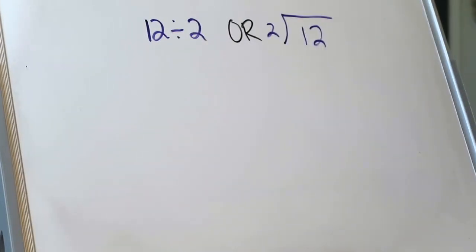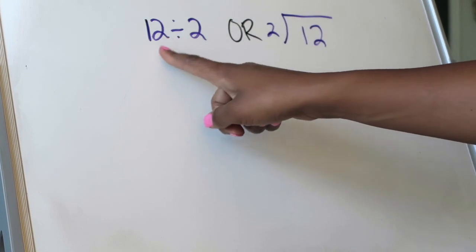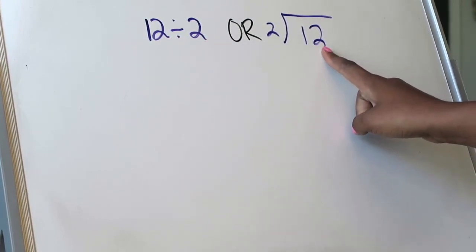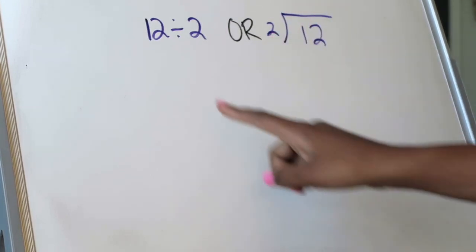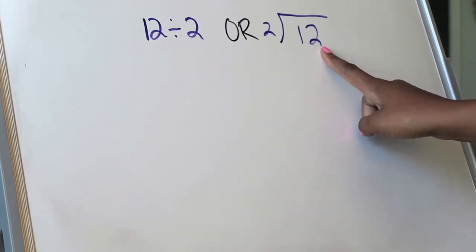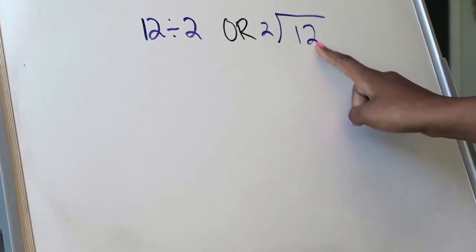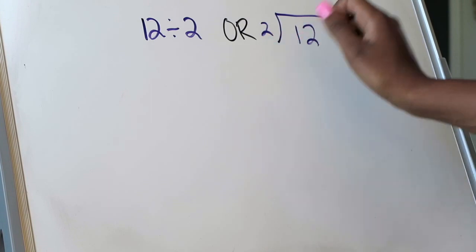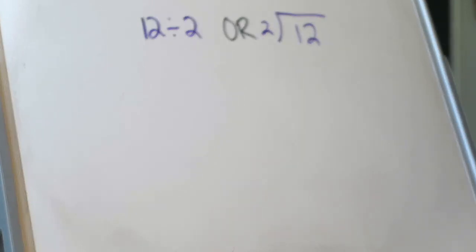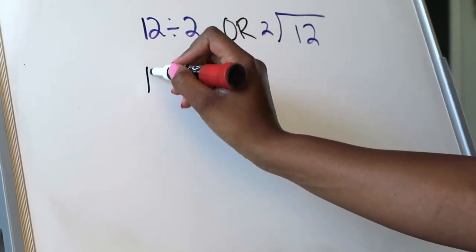Here we have our first example. We are going to be dividing 12 divided by 2, which could also be written as 12 divided by 2. 12 is our dividend, 2 is our divisor. Same thing here — 12 is the dividend inside the division house, 2 is the divisor knocking on the door. The first strategy we're going to look at is using repeated subtraction to solve. When you're using repeated subtraction, you're going to start by subtracting using your dividend.